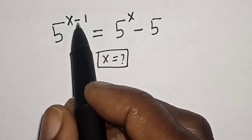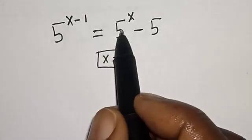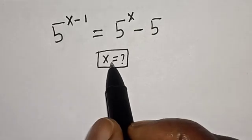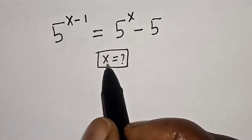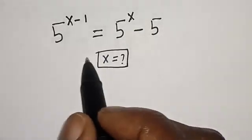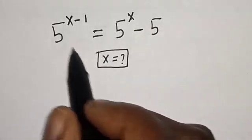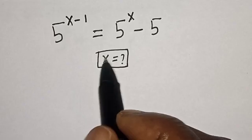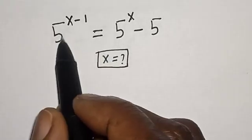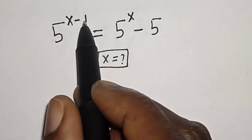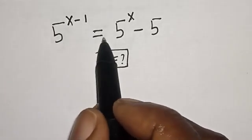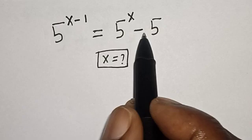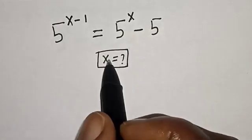5 raised to power x minus 1 is equal to 5 raised to power x minus 5. What is the value of x? Welcome to my class. In this class, we want to find the value of x from this equation: 5 raised to power x minus 1 is equal to 5 raised to power x minus 5.